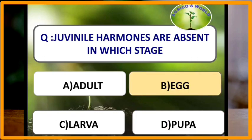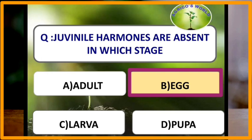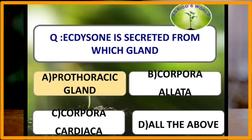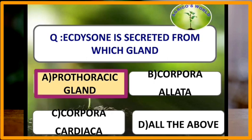Juvenile hormones are absent in the pupa stage of an insect. In integrated pest management, pheromones are used for mating disruption.